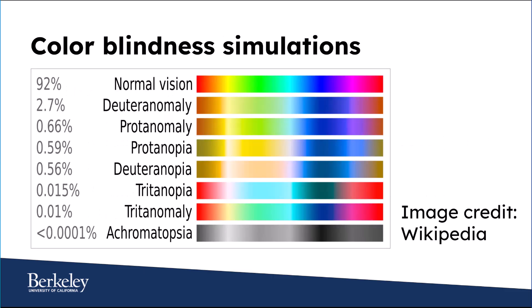Here are simulations of each type of color blindness. In this image the top band shows a rainbow as it appears to someone with color vision. Below this are the simulations of each type of color blindness and the frequency of each type in men. Deuteranomaly is the most common type and occurs in 2.7% of men. Complete color blindness, known as achromatopsia, occurs in less than 0.0001%.